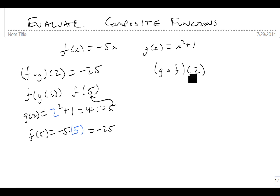But if I change my order, then this is really g of f of 2. So we're going to start with f of 2. Minus 5 times 2 is minus 10. So now we take g of that same minus 10 we just found,